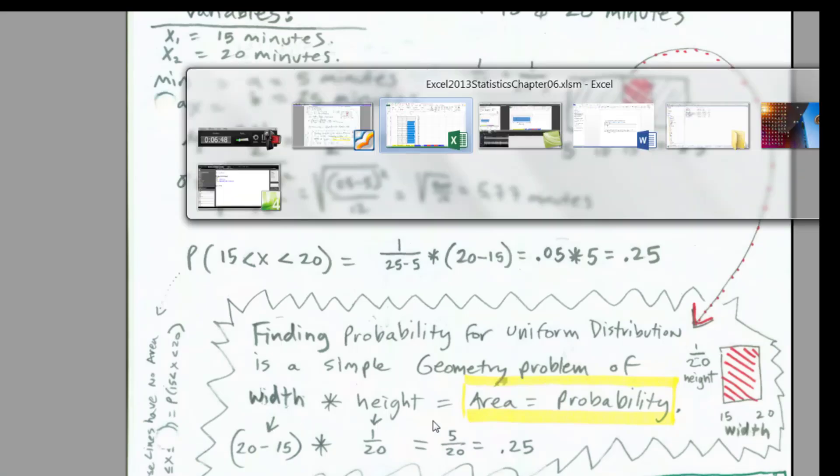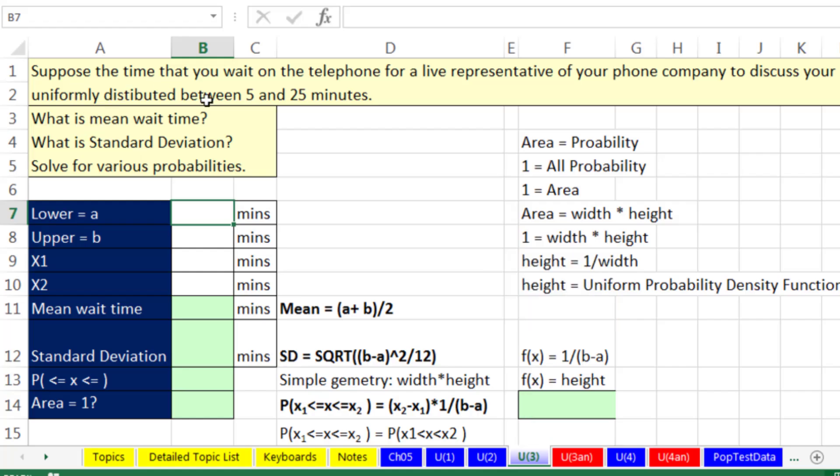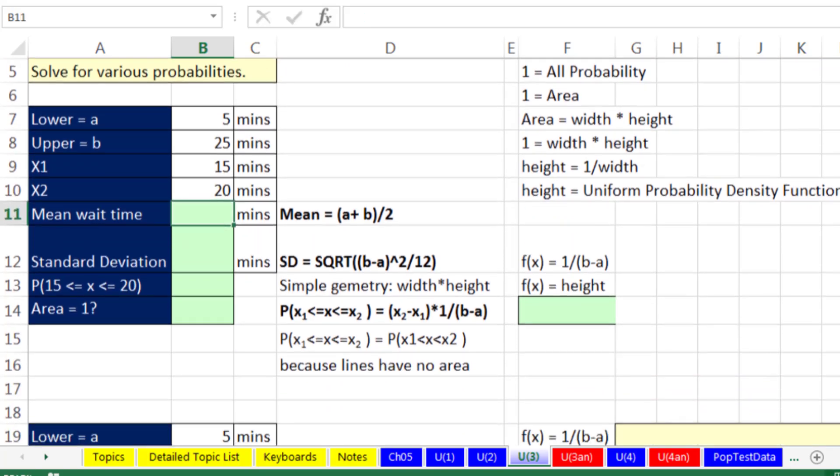Let's go over to Excel. Here's our same example. Suppose the time that you wait on the telephone for a live representative from your phone company to discuss your problem with you is uniformly distributed between 5 and 25 minutes. Let's calculate the mean standard deviation and solve for various probabilities. Now the low is going to be 5. The upper is going to be 25. Our particular x will start by saying 15 to 20 minutes. Now the key is, at least for me, is I'm going to draw pictures.